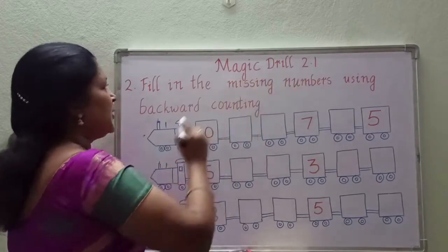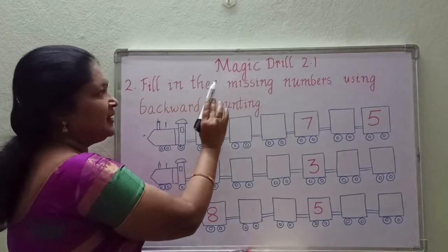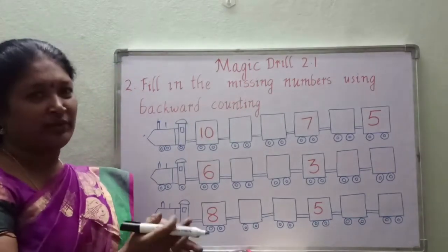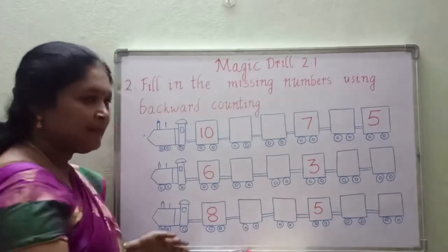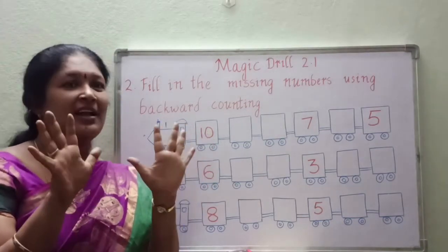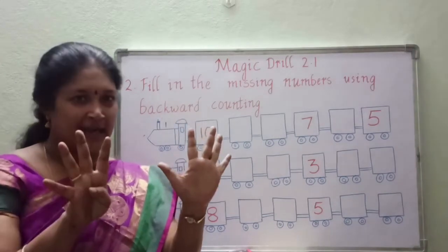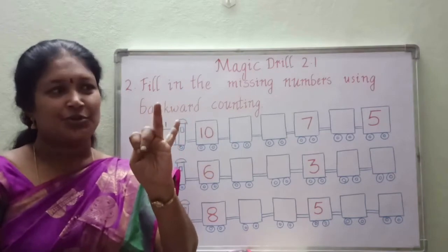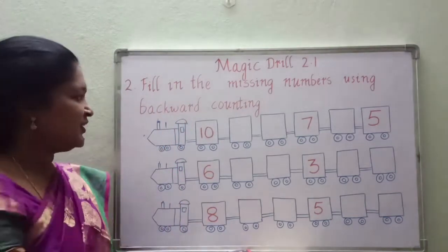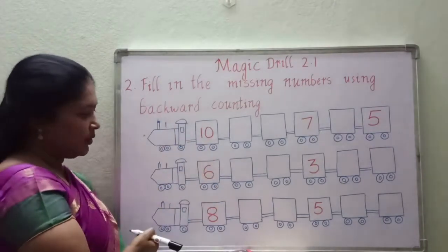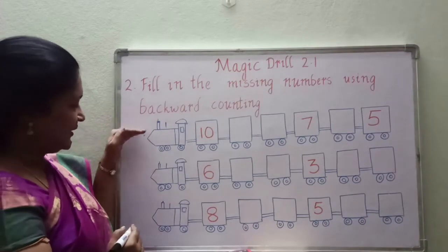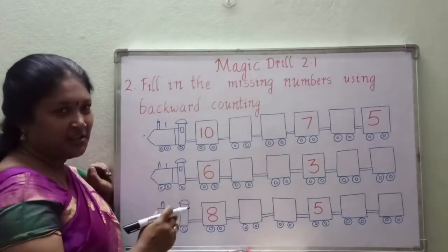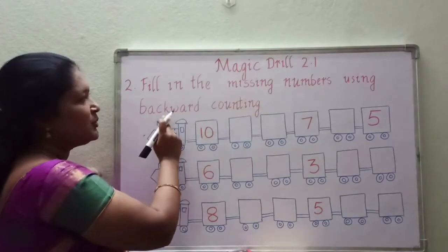Magic Drill 2.1 second bit. Read the heading: Fill in the missing numbers using backward counting. Backward counting means moving numbers to the before. So here how many fingers are there? 10 fingers. Let us count backward: 10, 9, 8, 7, 6, 5, 4, 3, 2, 1. There are trains here — 1st train, 2nd train and 3rd train. On the train compartments some numbers are there and some are missing. You have to write the missing numbers using backward counting.